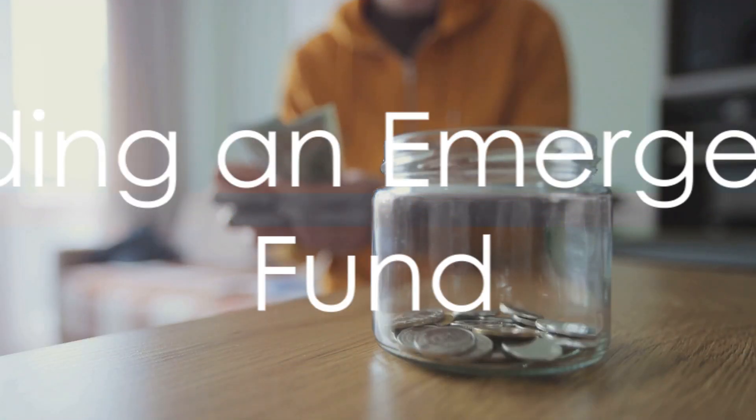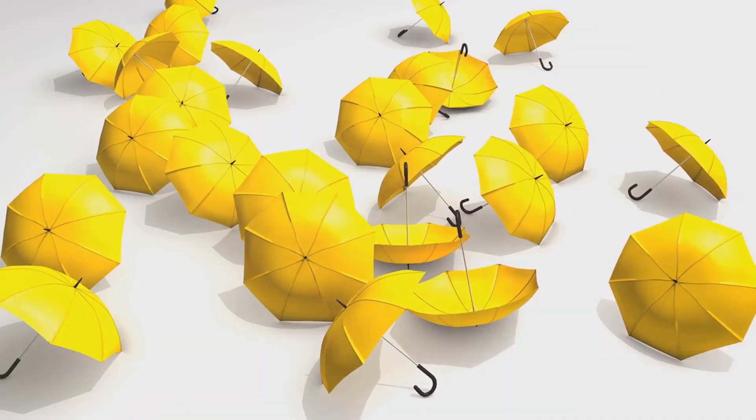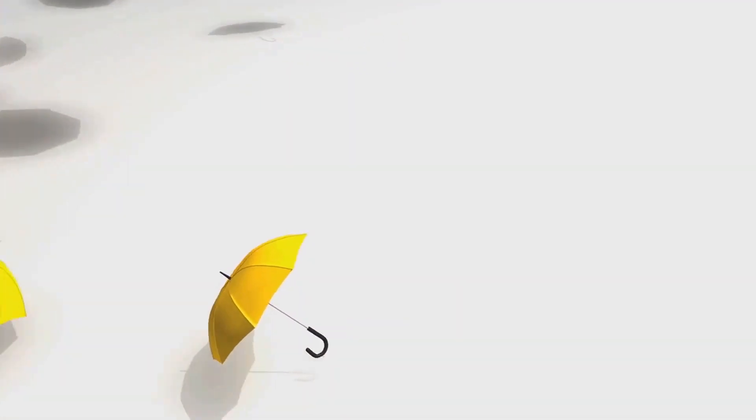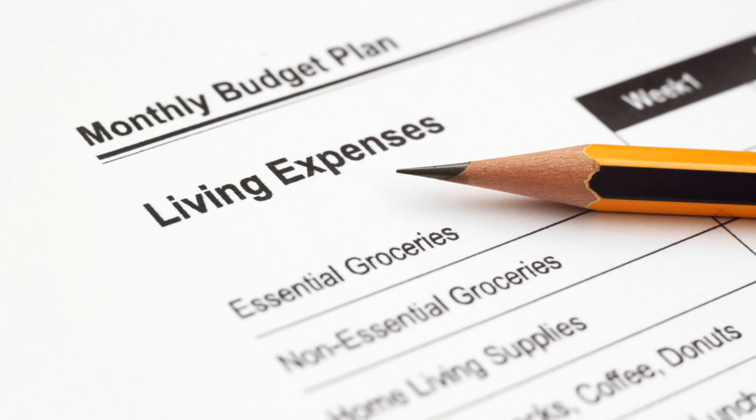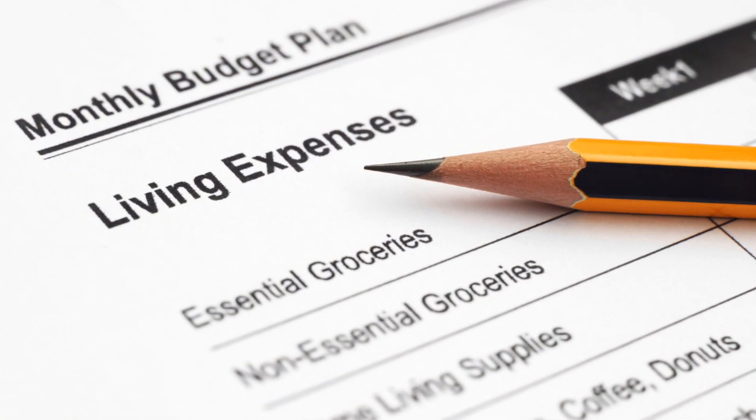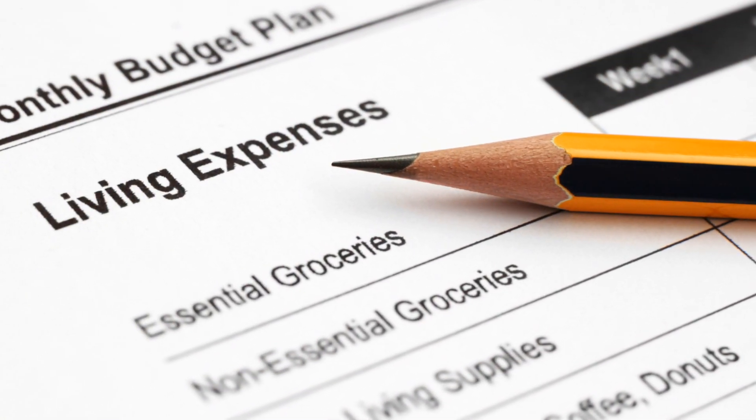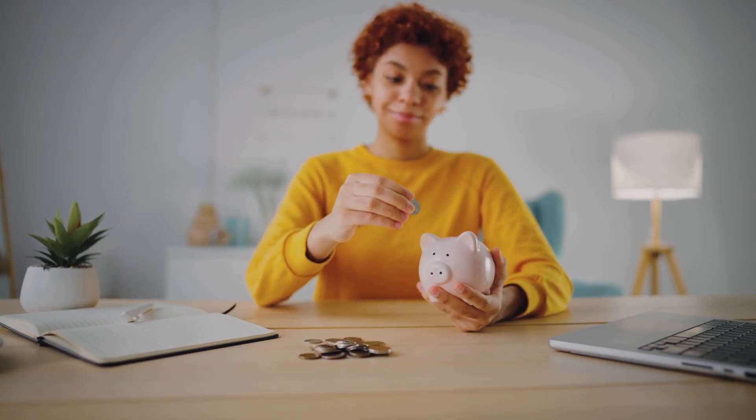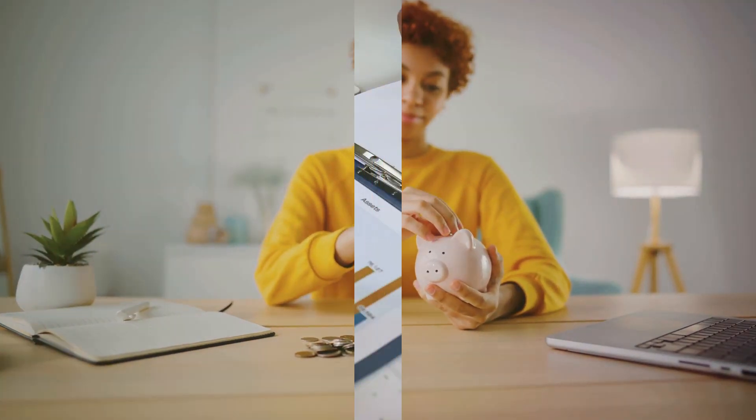Finally, always have an emergency fund. Life is unpredictable, and having a safety net can make all the difference in a crisis. Aim to save up enough to cover three to six months of living expenses. It might take time, but the peace of mind it brings is priceless.